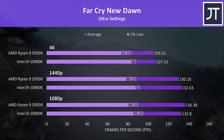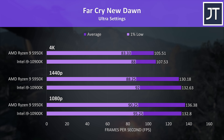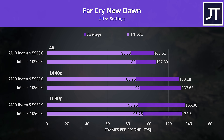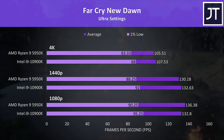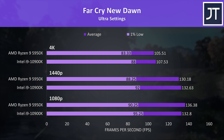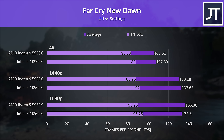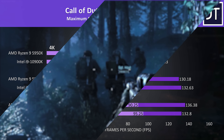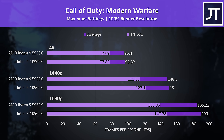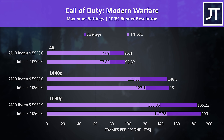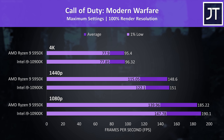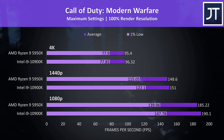Far Cry New Dawn was tested with the game's benchmark. This test typically depends on processor performance, and although the 5950X was ahead in average FPS at 1080p, the 10900K had a slightly better 1% low, and was actually ahead both for average FPS and 1% lows at 1440p and 4K. Call of Duty Modern Warfare was another slight edge to the 10900K — average FPS and 1% lows were better on the i9 at 1080p and 1440p, but again the differences are only small.